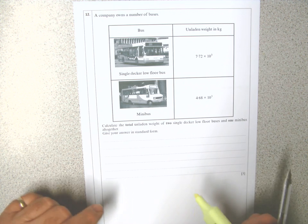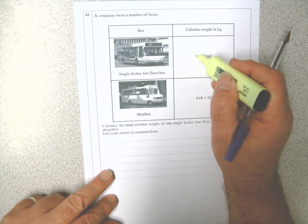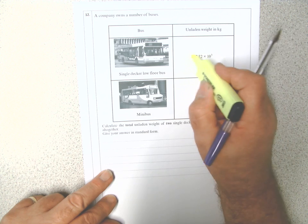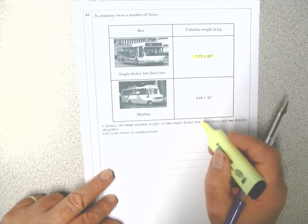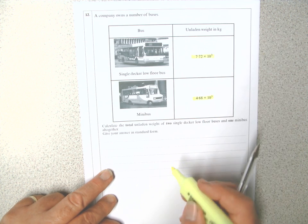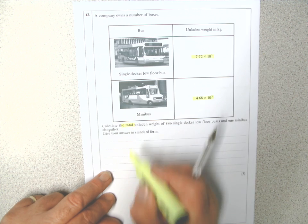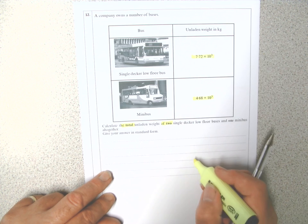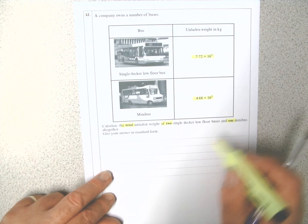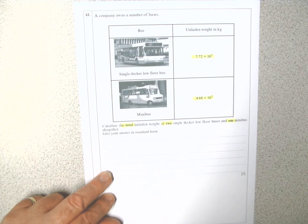This is a standard form question. We have the unladen weight of a single decker and the unladen weight of a minibus. I want the total of two single deckers and one minibus, so let's change these numbers first into ordinary numbers.